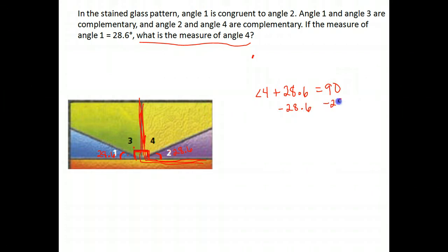We're going to go ahead and solve from there. Just going to subtract 28.6 from both sides, and I'll find out what do you have to add to 28.6 to get 90? And it looks like it's 61.4. So the measure of angle 4 would be 61.4.